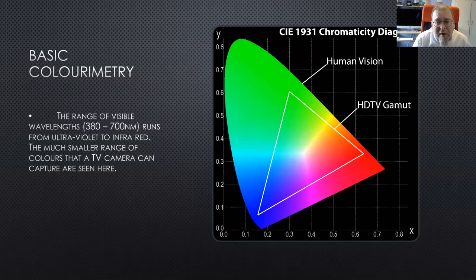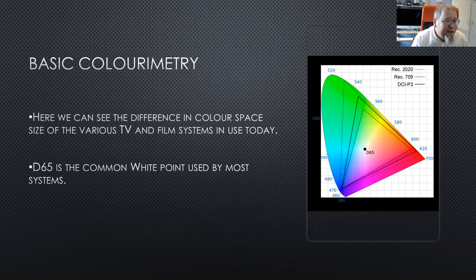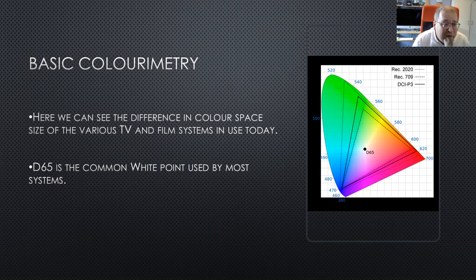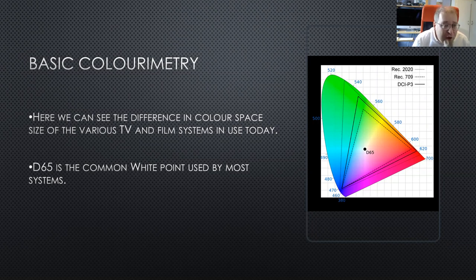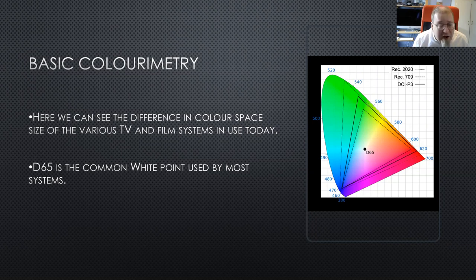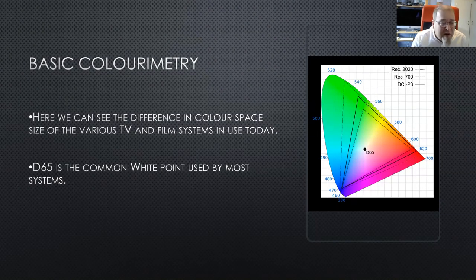We always used to have terrible problems with cyan back in PAL days. This diagram shows the three color spaces in common use in television. The first is Rec 709, the smallest, developed from Rec 601. The second is DCI P3, the projection standard you'll see in cinemas — giving a bit more color. The third, Rec 2020, is the new standard for HDR and gives considerably more range. Color space is getting bigger, but you can only reproduce so much of it, and some colors may fight you.